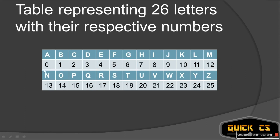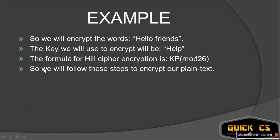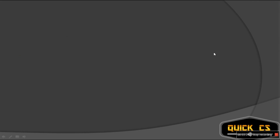Now let's look at an example. We'll encrypt the plain text 'hello friends'. The key that we'll use to encrypt this will be 'help'. The formula for Hill Cipher encryption is KP mod 26, and we'll follow all the steps to encrypt our plain text 'hello friends'.